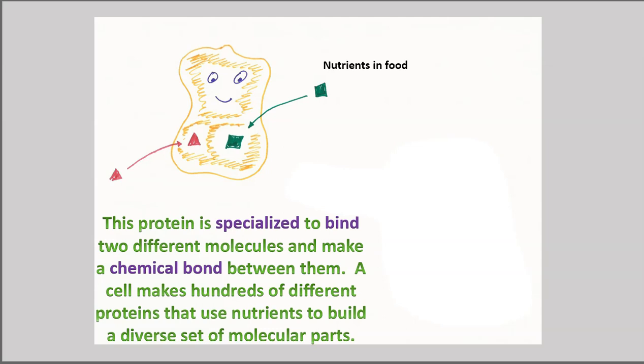So let's see how this process works. Here's a protein, and it's specialized to bind two different molecules and make a chemical bond between them. A cell makes hundreds of different proteins that use nutrients to build a diverse set of molecular parts. Here we have these nutrients, maybe they were imported from the environment as food.